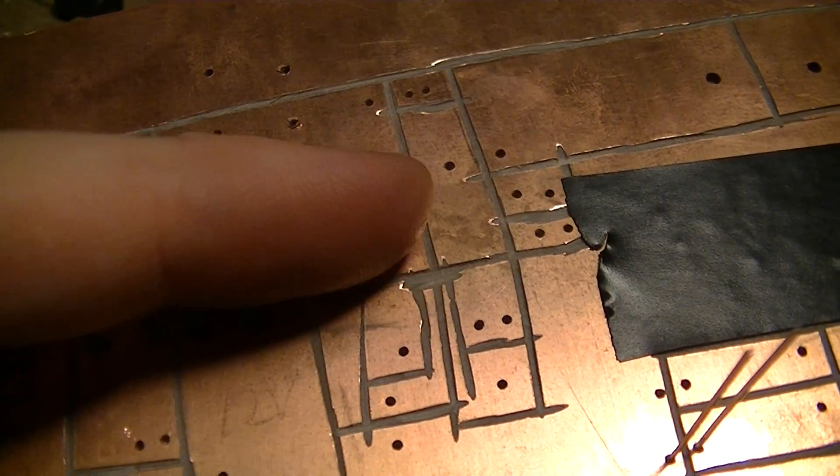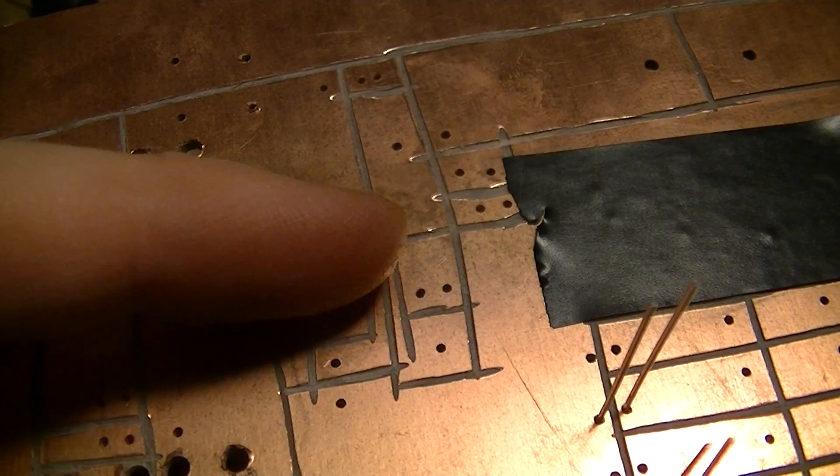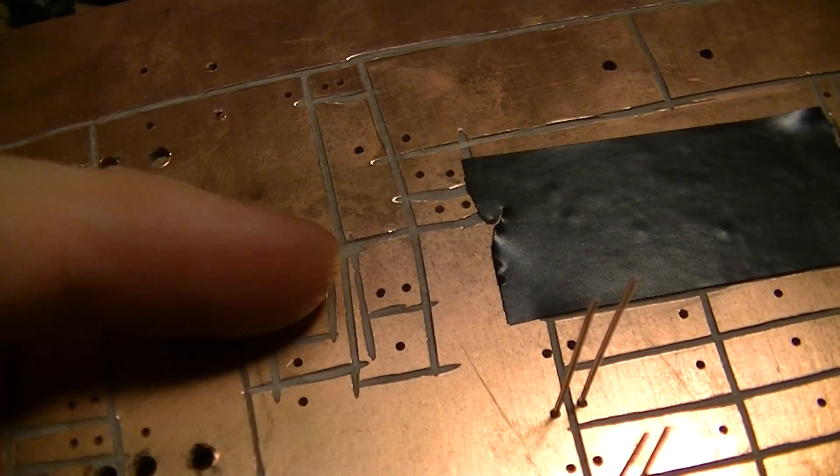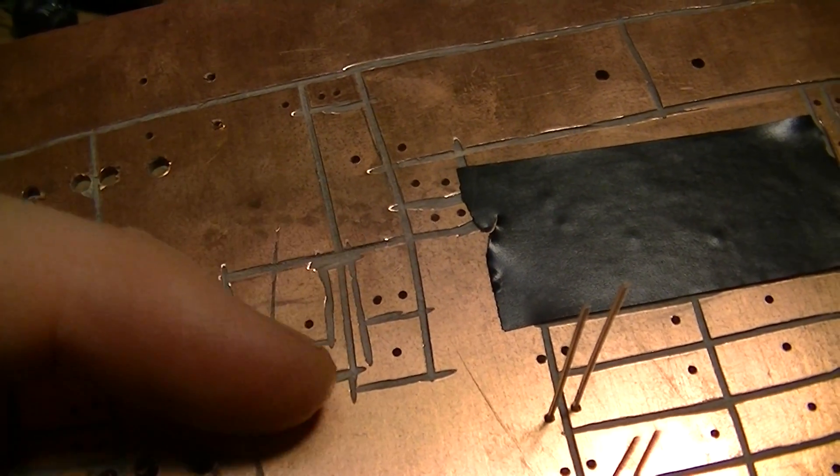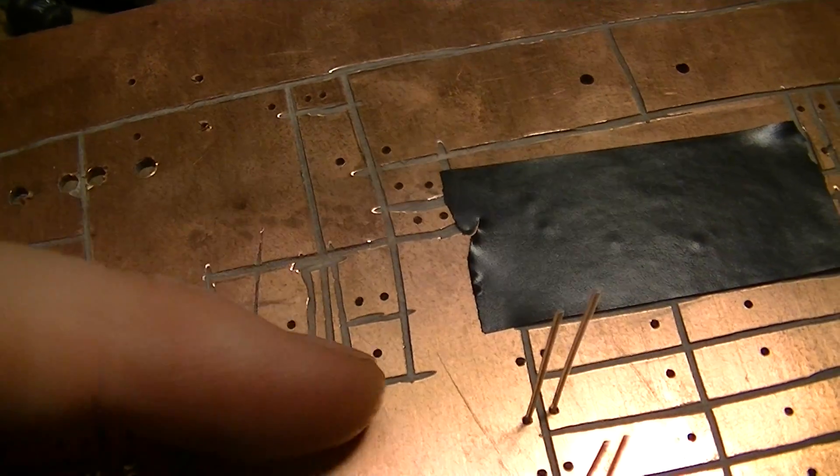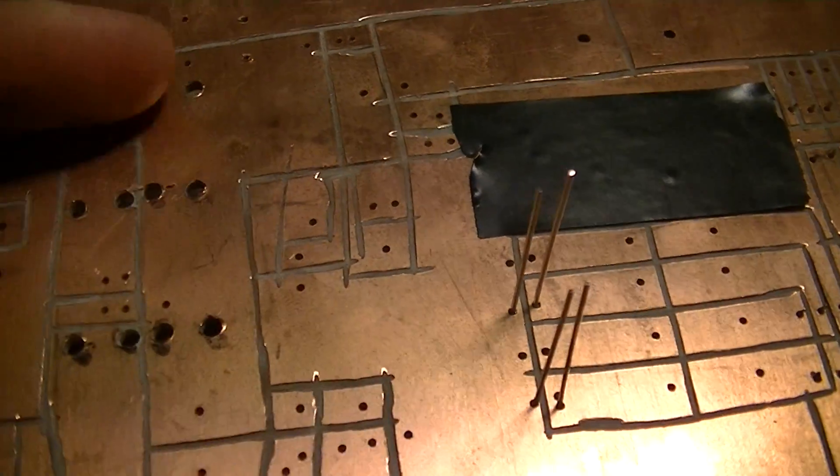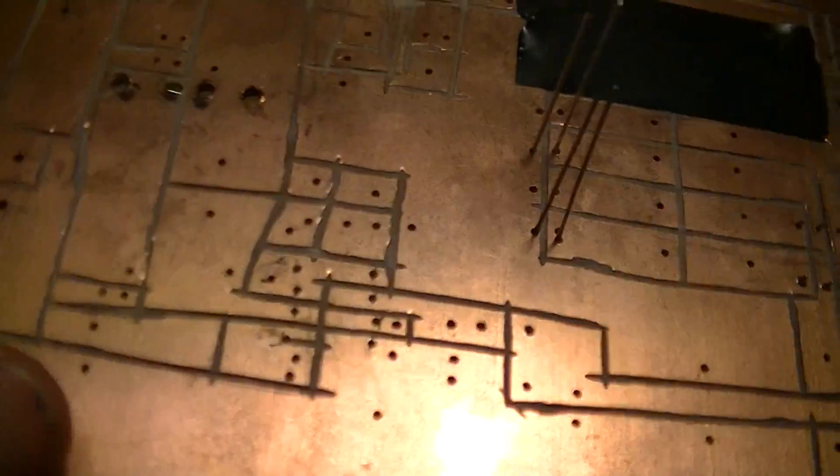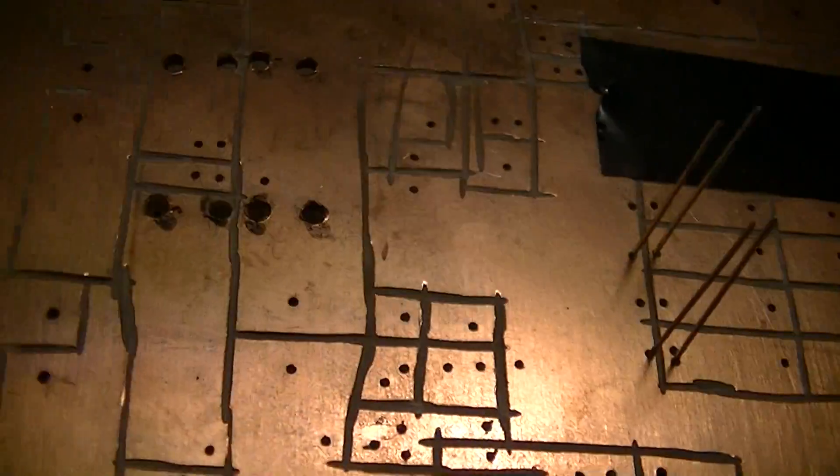There's the space for the ACS713 Hall effect current sensor and various associated components. One's the built-in filter capacitor, one's the bypass cap for the five volt supply. The other holes are just for the wires that run off for the various signal and power wires.